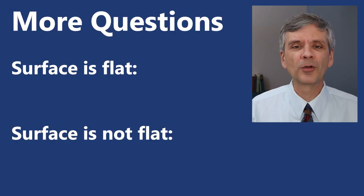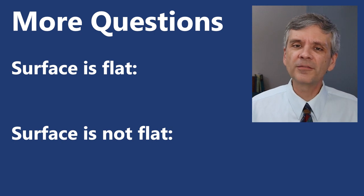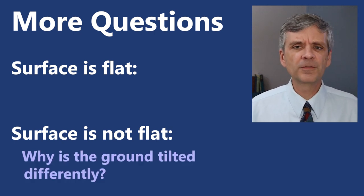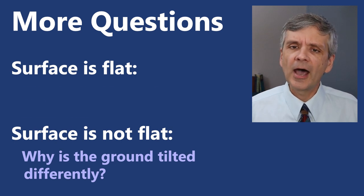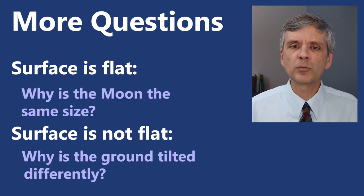Both of these explanations bring up more questions. If the earth is not flat, why is the ground tilted in different directions on different parts of the earth? And if the earth is flat, how does the moon appear the same size when it's twice as far away?